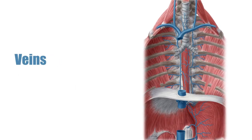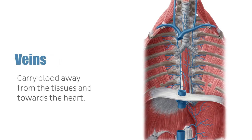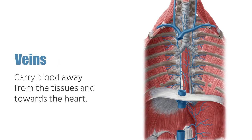Veins carry blood away from the tissues and towards the heart and have thin walls. Their internal lumen is larger than that of the arteries due to the fact that they contain blood under low pressure. They also have valves that prevent the blood from flowing backwards.